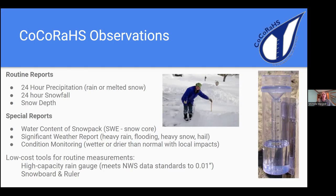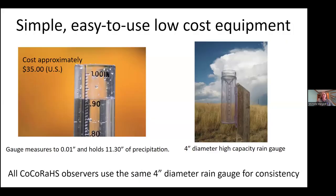What's great about CoCoRaHS is its low-cost equipment used for routine observations. The CoCoRaHS rain gauge is a 4-inch diameter plastic rain gauge that meets National Weather Service standards, measuring to the hundredth of an inch. It's high capacity. For snow measurements, the low-cost tools include a snowboard made from plywood and a ruler. The rain gauge is used by all CoCoRaHS observers across the country for consistency, holding up to 11.3 inches of precipitation, and costing about $35.